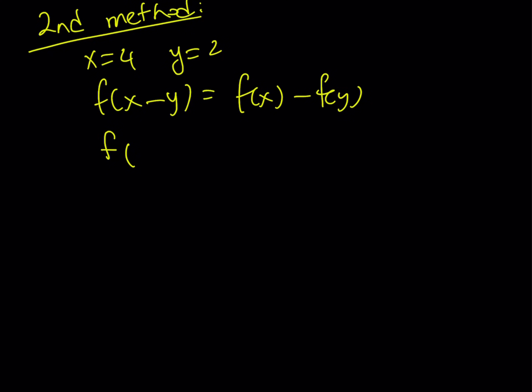I'm going to replace x with 4 and y with 2. That's going to give me f(4-2), which is f(2), equals f(4) - f(2). This means that f(4) = 2f(2). And since I know that f(2) = 5, from here, I'm getting f(4) = 10.